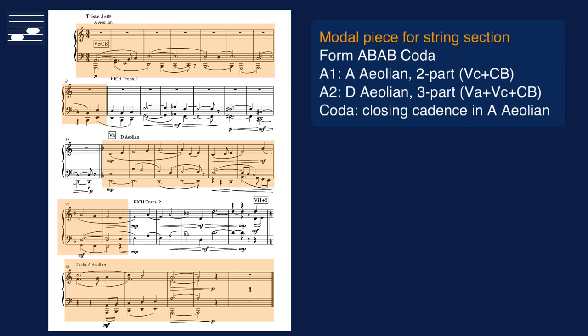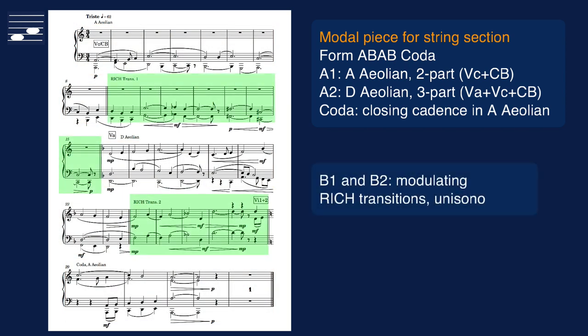This also is a modal composition. This time we use a single minor mode, Aeolian. The instrumentation is for string orchestra. The form is ABAB coda. The first A section is two part in A Aeolian. The second A section is three part with violas taking the lead. The B sections are unison modulating transitions that use the two RI chains. The cue closes with a cadence, returning to the original key. Listen to this slow, tragic cue.